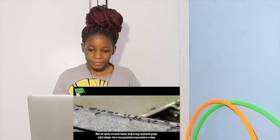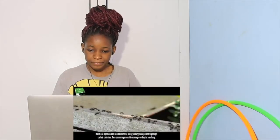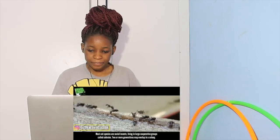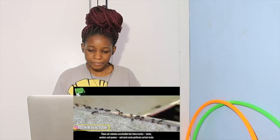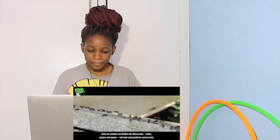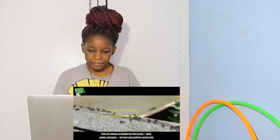Most ant species are social insects living in large cooperative groups called colonies. Two or more generations may overlap in a colony. These ant colonies are divided into three castes: males, workers, and queens.